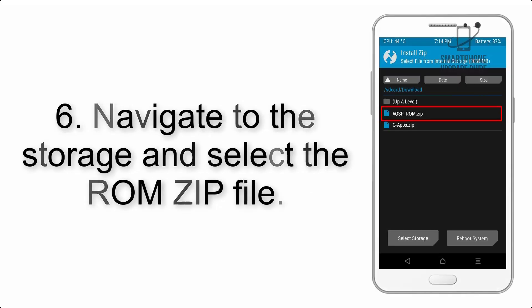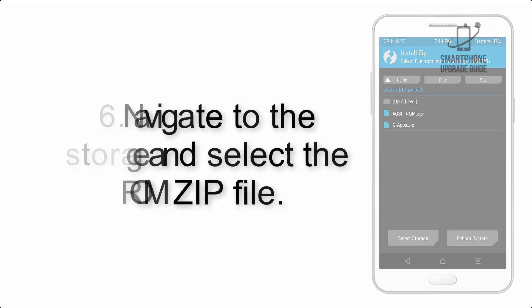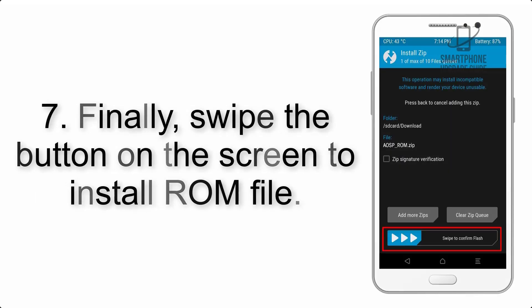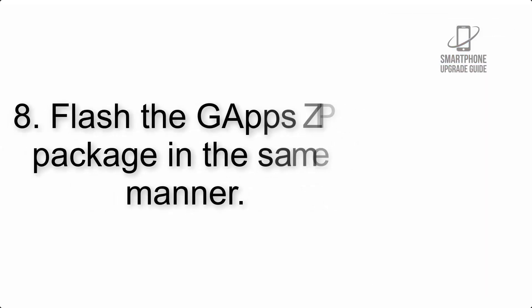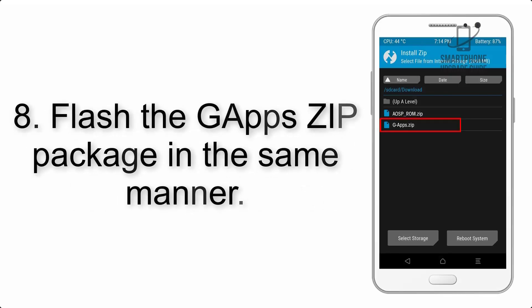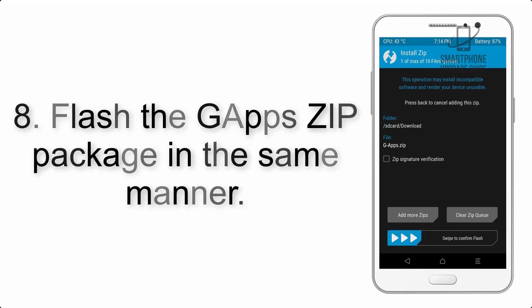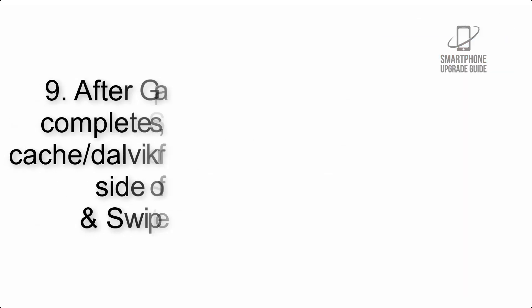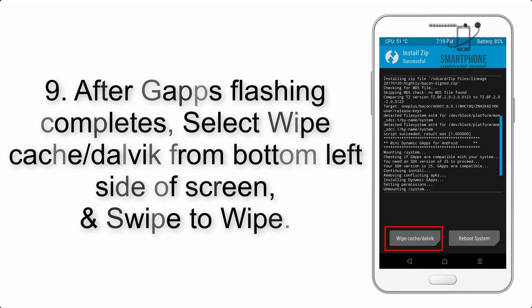Step 6: Navigate to the storage and select the ROM zip file. Step 7: Finally, swipe the button on the screen to install the ROM file. Step 8: Flash the GApps zip package in the same manner.